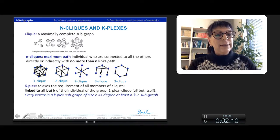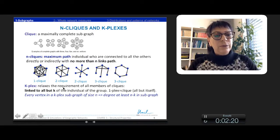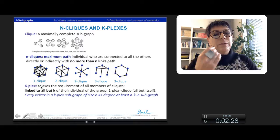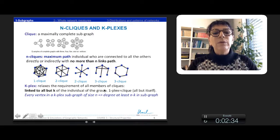Now, on the K-Plex, we relax not on the paths, but on the number of linkages every node can have. In the K-Plex, we relax for each node. Each node is linked to all but K of the individuals of the group.